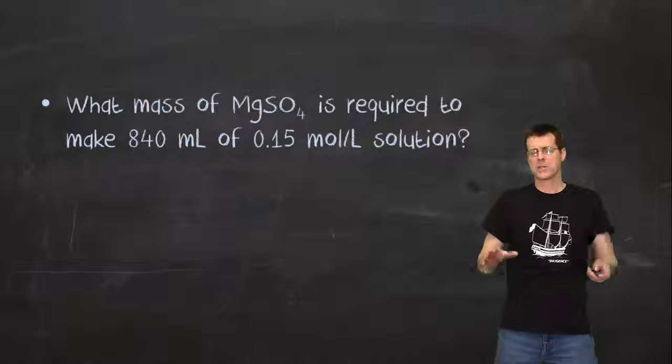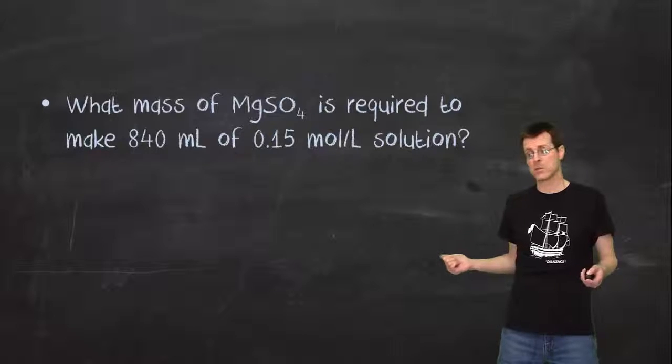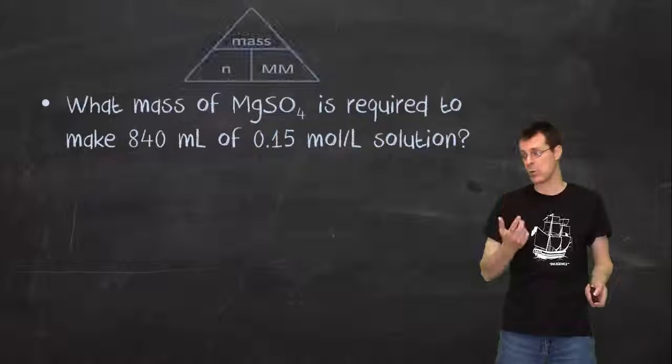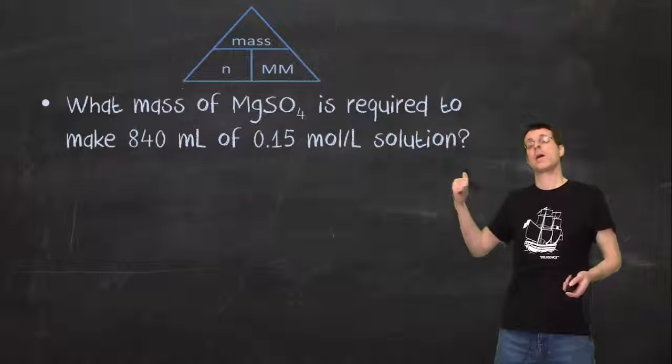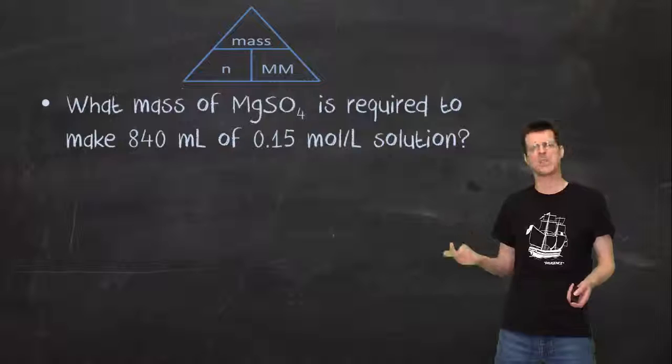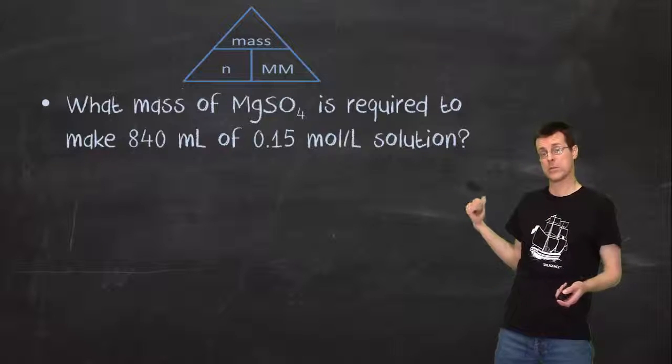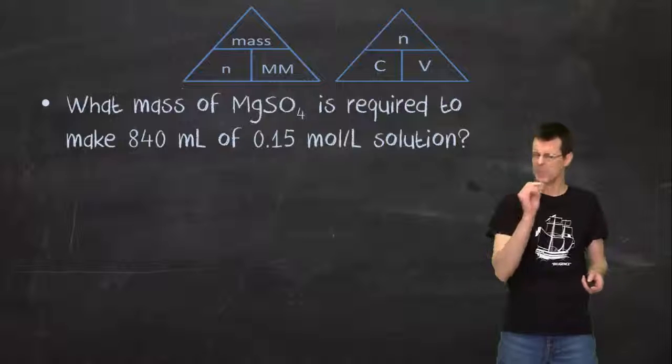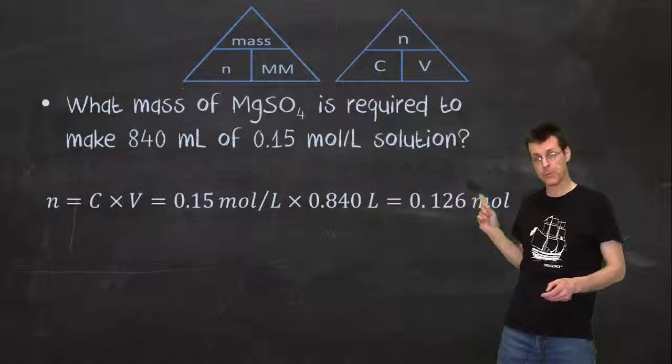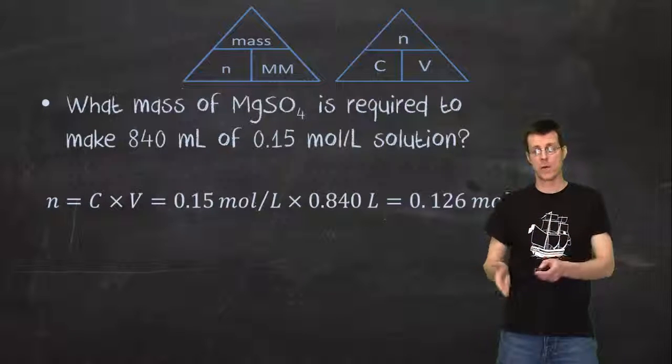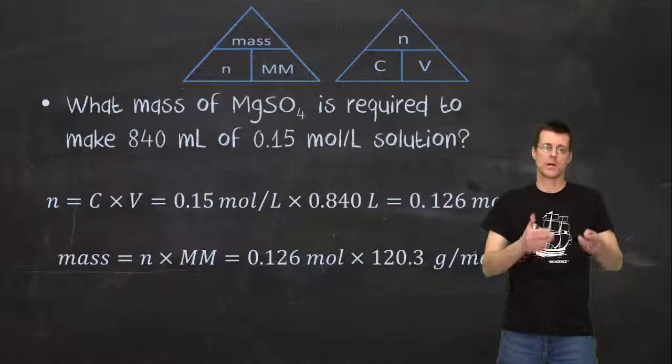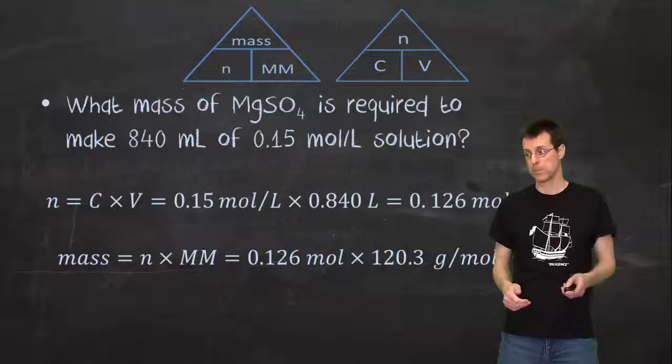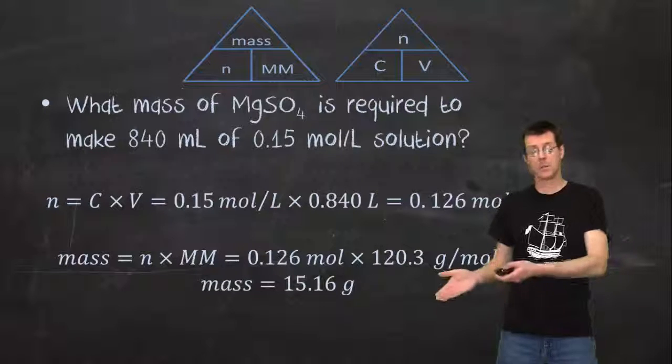What about this? What mass of MgSO₄ is required to make 840 mL of 0.15 mol/L solution? If I'm trying to make the solution, I need to know how much stuff to add. I'm trying to find a mass. Mass is number of moles times molar mass. I have molar mass because I've got a chemical formula. I don't have number of moles, but I have a solution. Using the solution information, I can calculate number of moles. When in doubt, answer the question, but pay attention to the units. First calculate number of moles: concentration times volume. Volume must be in liters. Then I use that number of moles with my molar mass to find mass. I get a final answer for mass, paying attention to the units all the way through.